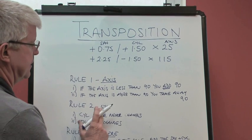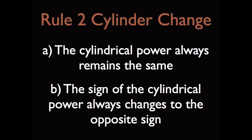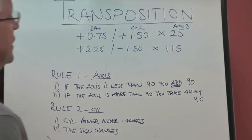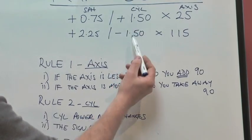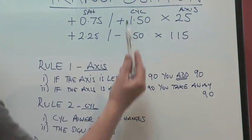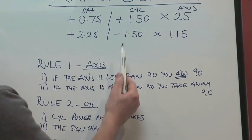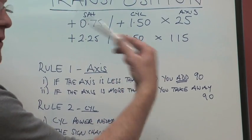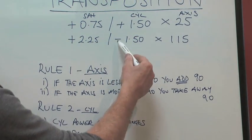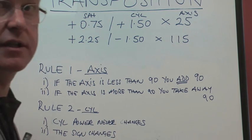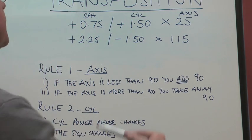Now we're going to look at the rule that relates to the cylinder. And this again is very simple. The cylinder power always remains the same. So you never change the cylinder power. But the only thing that does change is the sign. So if it's a plus, when you transpose the prescription, then the cylinder power becomes a minus and vice versa. If it's a minus, then it has to be changed to a plus.